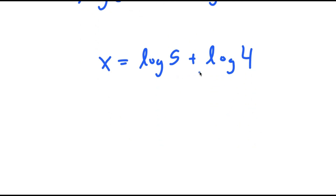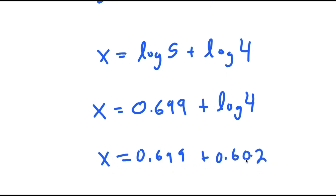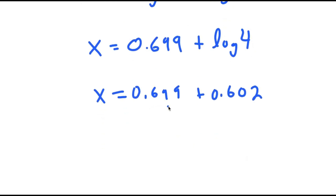From here, log of 5, if I plug that into a calculator, log of 5 is equal to 0.699. And now I'm going to do the same for log 4 — plugging this into a calculator, log of 4 is equal to 0.602. So I have 0.699 plus 0.602, which is equal to 1.301.